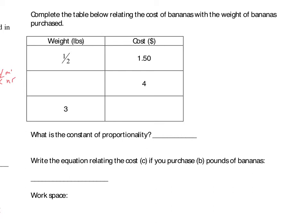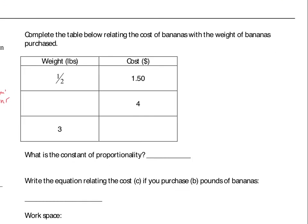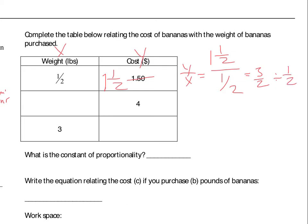I'm going to think about this as dollars per pound. So this is going to be my Y and this is going to be my X — so Y over X. I'll change the values to fractions: one and one-half becomes three-halves. So Y over X is one and one-half over one-half, which is three-halves divided by one-half, times its reciprocal two over one. Doing some cross-canceling, that tells me my constant of proportionality is three.